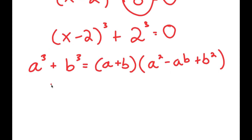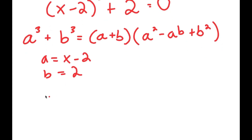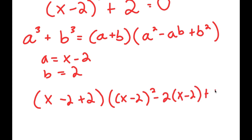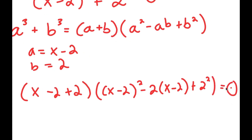So in this case, a is equal to x minus 2 and b is equal to 2. So I get x minus 2 plus 2 times x minus 2 squared minus 2 times x minus 2 plus 2 squared, and this is equal to 0.